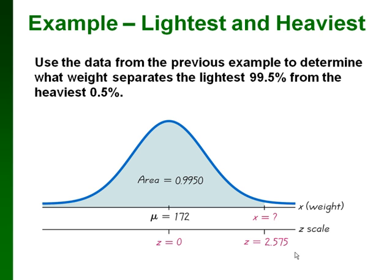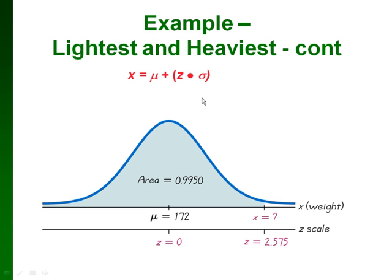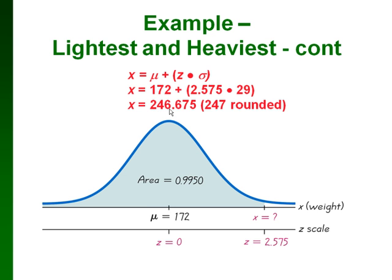Now we need to go back from our z-score back to our x to get our weight. So we're going to use that little formula, put in the z-score that we found, and our mean and our standard deviation, and we end up with 247 pounds if we round it to the nearest pound. The weight of 247 pounds separates the lightest 99.5% of men from the heaviest 0.5%.